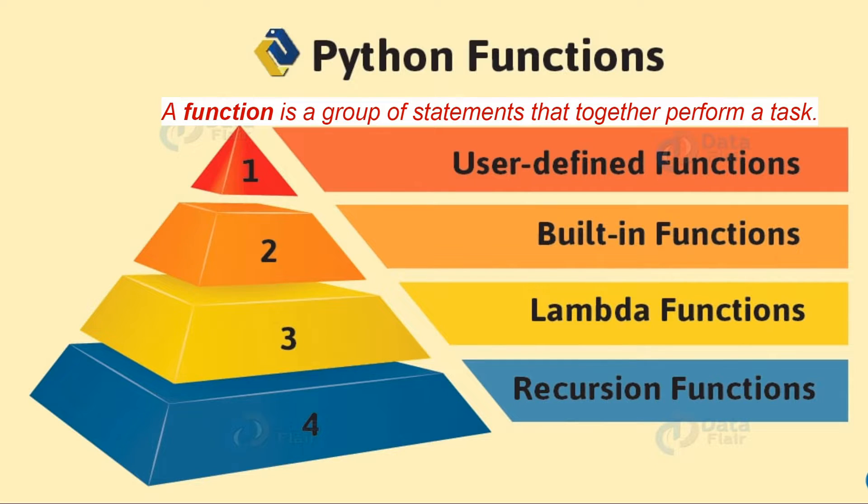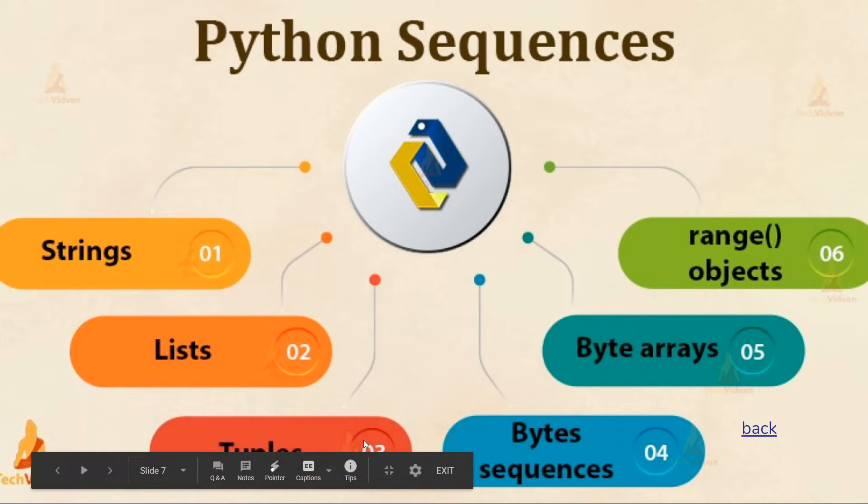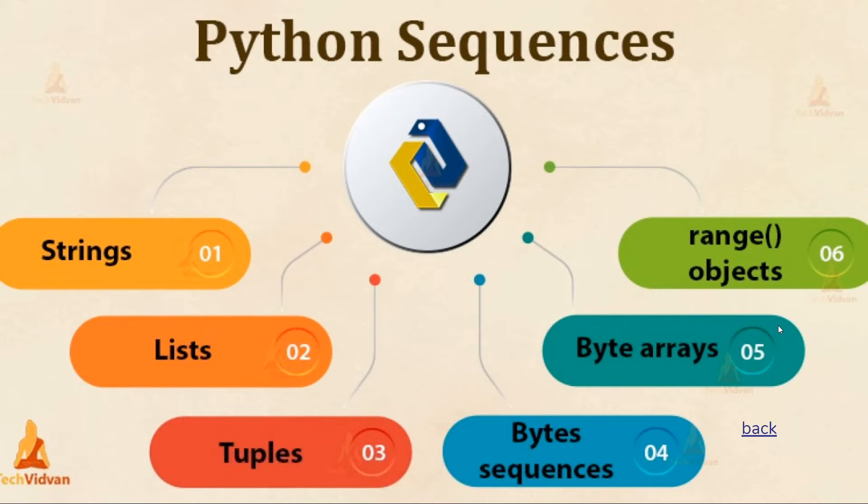Python sequences: in this we can store or arrange our data in different ways, just like strings, lists, tuples, byte sequences, byte arrays, and range objects.